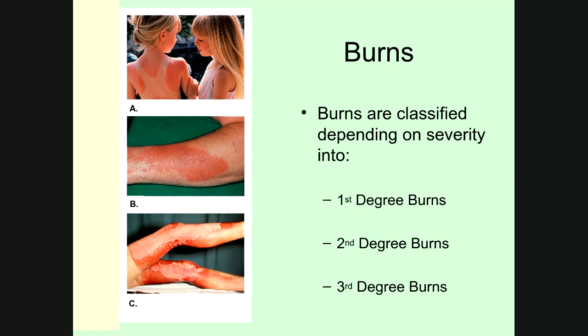The most severe type, using the first/second/third degree classification scheme, is a third degree burn. If you look at picture C, with a third degree burn the epidermis is basically obliterated, the dermis is basically obliterated as well, the hypodermis may be destroyed, and we may have even burned down into lower tissues like muscles, tendons, ligaments, and bones. When both the epidermis and dermis have been completely destroyed, you're dealing with a third degree burn.